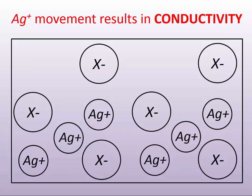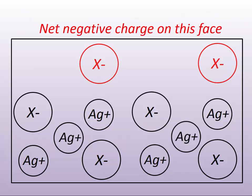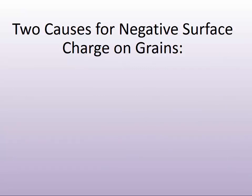What also results when that silver drops out of its position is a defect site which creates a net charge. As shown in this illustration, when a silver positive ion falls into an interstitial site, at the surface there is now a net negative charge. And as mentioned before, the net charge of a grain is in fact negative.